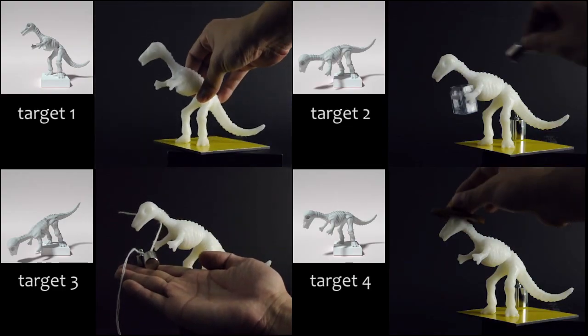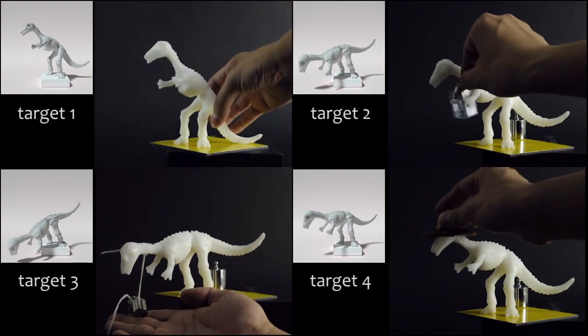The dinosaur model has four different target shapes under different force settings, and our fabricated object can achieve these targets very closely.